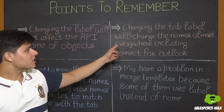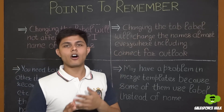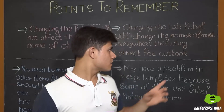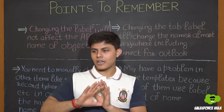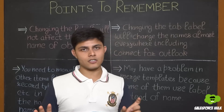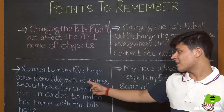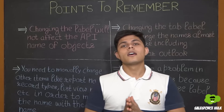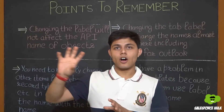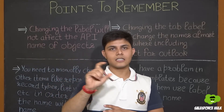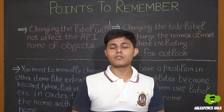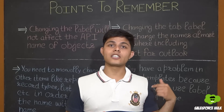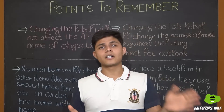The next point is that changing the tab label will change the names almost everywhere in the UI, including Connect for Outlook. However, you need to manually change other items like report names, record types, and list view names to match the new tab name. If you've created any reports or record types named 'Account Record Type 1,' for example, you must manually update those since they are not automatically linked to the tab name.